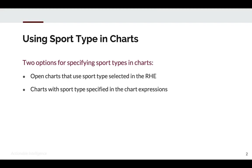There are a couple of options for specifying sport types when you display charts and reports. The easiest way is to use regular charts and select the sport types you want in the sport picker at the top of the right-hand explorer, or RHE for short. The second way is to build charts with sport types specified in the chart expressions themselves, and we're going to take a look at both of these options.